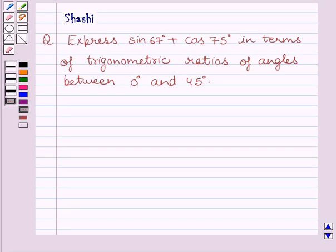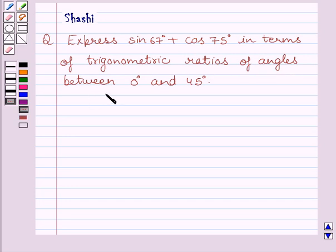Hi and welcome to the session. Let us discuss the following question: express sin 67 degrees plus cos 75 degrees in terms of trigonometric ratios of angles between 0 degrees and 45 degrees.